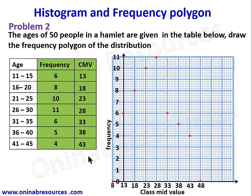We join all these points together with straight lines to complete the frequency polygon for this distribution. That is the end of solution to problem two. Remember to check the description section on our YouTube channel for the link to our previous video on histogram and other related videos on cumulative frequency curve and other statistical topics. Please subscribe, like, and share this video. Goodbye!